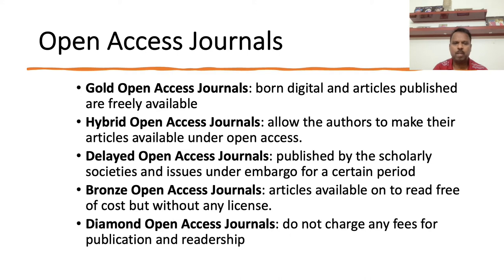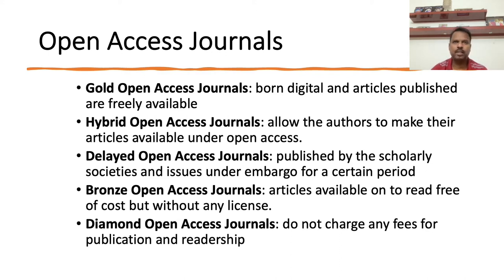Because they make content available for commercial use as well, they charge large article processing charges that may go up to thousands of dollars. There is another model called hybrid open access journals — these are subscription journals where readers subscribe personally or through institutional library access. As an author, you can publish under open access by paying article processing charges, or if you don't want it openly available, you can keep it closed access without paying anything.